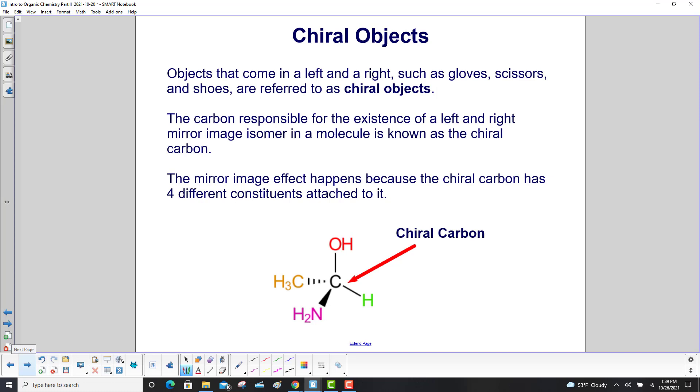Objects that come in a left and a right such as gloves, scissors, and shoes are referred to as chiral objects. The carbon responsible for the existence of a left and right mirror image isomer in a molecule is known as the chiral carbon. The mirror image effect happens because the chiral carbon has four different constituents attached to it.